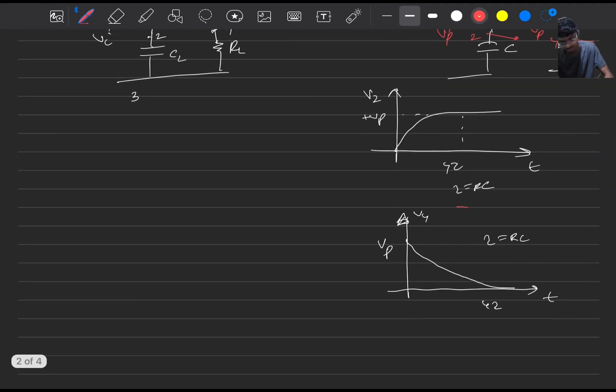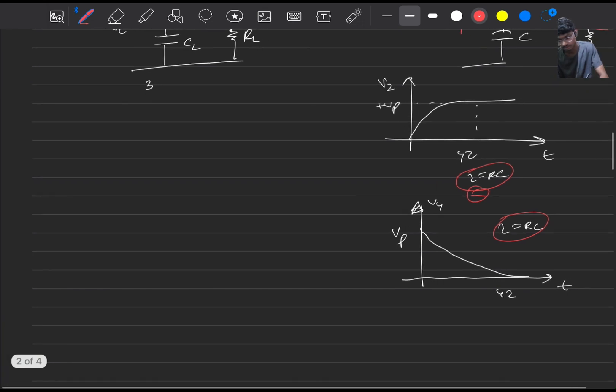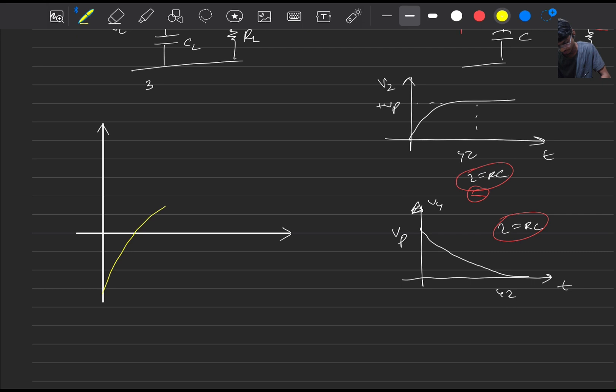So we just have to subtract these two. The time constant is same so this can be easily subtracted off and the result will be similar to what we obtained in the method one. It will go from minus Vp to plus Vp.